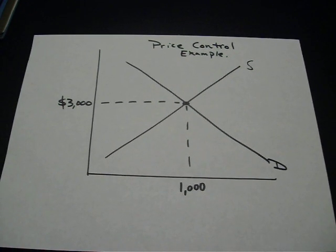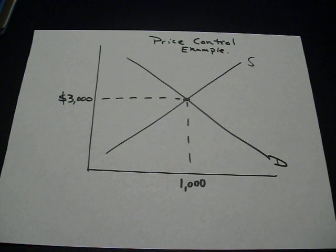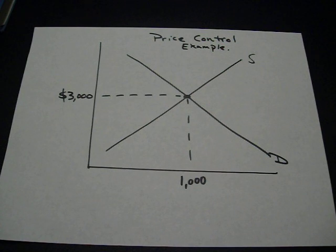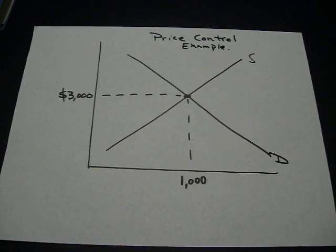So here's an example of a price control and what you might see on an AP microeconomic test. Supply and demand has determined the price is $3,000 and you see that there's 1,000 that's bought and sold.